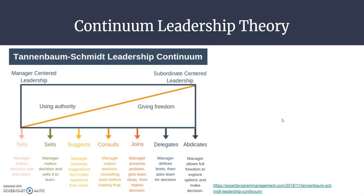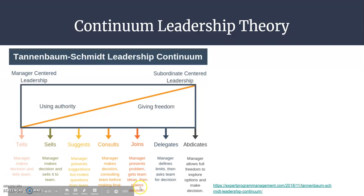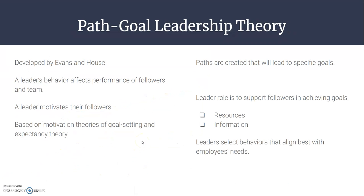This diagram lays out the continuum leadership theory well. At one extreme is boss-centered leadership, where all authority rests with the leader and individuals have none. At the other extreme is a more laissez-faire approach, where individual members have the authority and freedom. There are seven leadership styles that match the levels of authority or freedom on the continuum, influenced by factors such as organizational structure, time, and the ability of individuals.